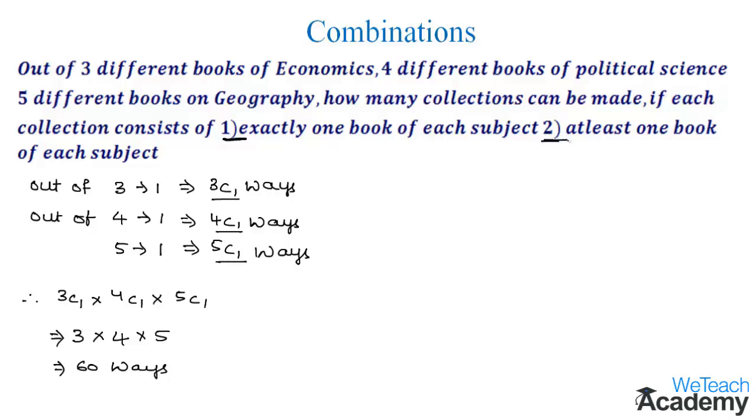Now let us solve the second case. Before going to solve the second case, let us recall the formula. The number of ways of selecting one or more things from n dissimilar things is given by 2^n - 1.